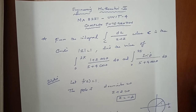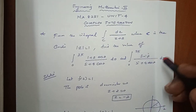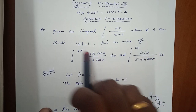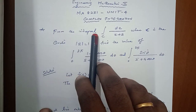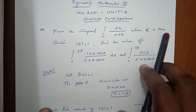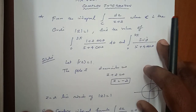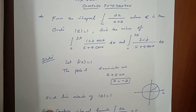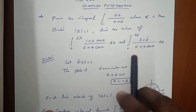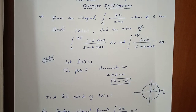Engineering Mathematics 2, MA 8251, unit number 4, complex integration. First sum: evaluate the integral over a closed curve dz by (z + 2), where C is the circle with modulus of z equal to 1. Find the value of the integrals from 0 to 2π of (1 + 2cosθ)/(5 + 4cosθ) dθ and from 0 to 2π of sinθ/(5 + 4cosθ) dθ.